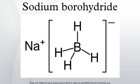Structure: NaBH4 is a salt consisting of the tetrahedral BH4⁻ anion. The solid is known to exist as three polymorphs: I±, I², and I³. The stable phase at room temperature and pressure is I± NaBH4, which is cubic and adopts an NaCl-type structure in the Fm3m space group. At a pressure of 6.3 GPa, the structure changes to the tetragonal I² NaBH4, and at 8.9 GPa, the orthorhombic I³ NaBH4 becomes the most stable.